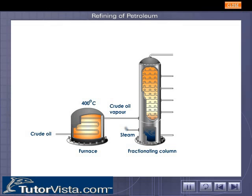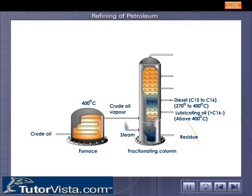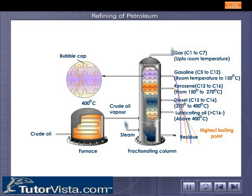As the mixture of hot vapors rises in the column, it starts getting cooled gradually. Due to this, the vapors of the higher boiling fractions of petroleum condense first in the lower part of the tower, but the vapors of the low boiling fractions rise up into the tower and condense later. In this way, the fraction of petroleum having the highest boiling range is collected in the lowest part of the fractionating tower, and the fraction having the lowest boiling range is collected in the topmost part of the tower.